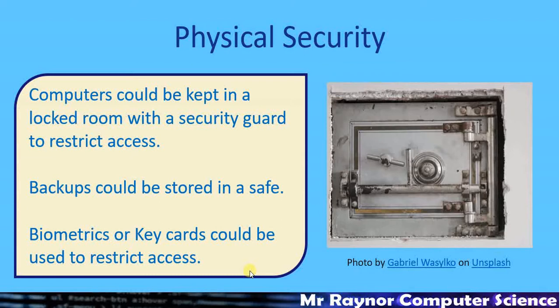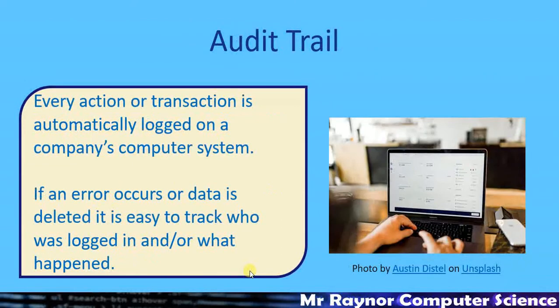Audit trails are a method of not so much preventing data loss, but keeping track of who was accessing a system at any given moment. A banking company might use an audit trail to automatically record things like every time a user logs in or every time a transaction is made. If something bad happens and data is lost, they can refer back to the audit trail, find out when the transaction was made and who was logged in — and hopefully take action. It doesn't prevent data loss but gives a way of tracking what's happened.